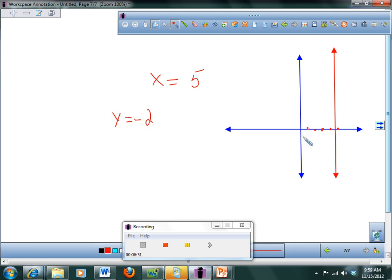Who can tell me what y equals negative 2 would look like? What would it look like? Through y. Where? Through negative 2. Through negative 2. So you go down 2. And then you put a horizontal line through negative 2. Kind of like this. That would be y equals negative 2.